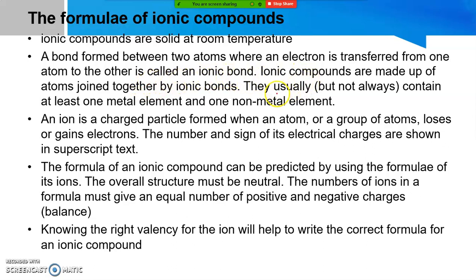Ionic compounds are made up of atoms joined together by ionic bonds. They usually, but not always, contain at least one metal element and one non-metal element.